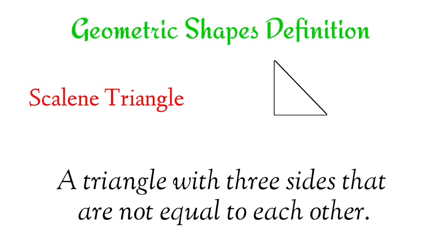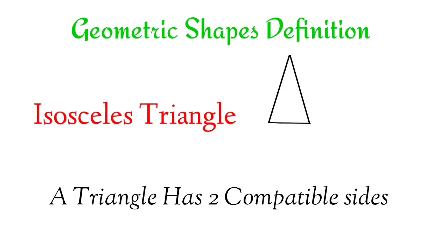Scalene triangle. A triangle with three sides that are not equal to each other. Isosceles triangle. A triangle has two compatible sides.